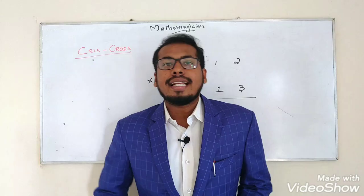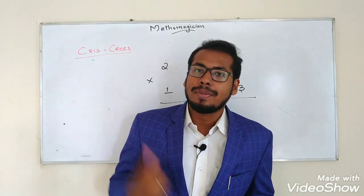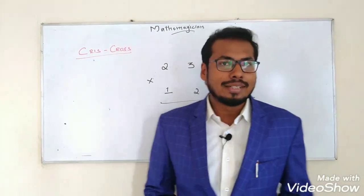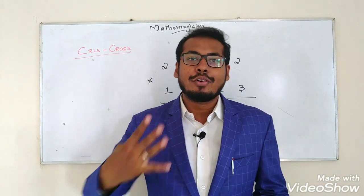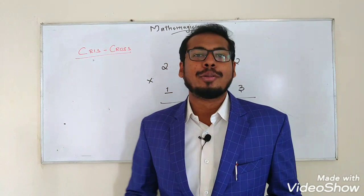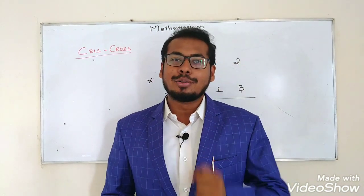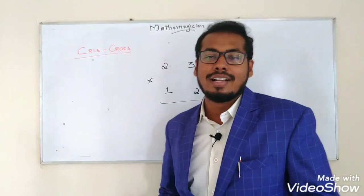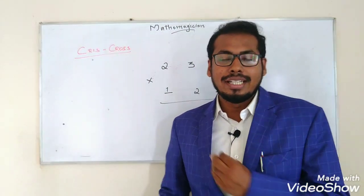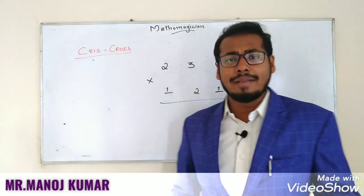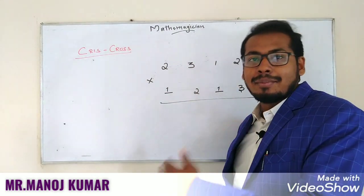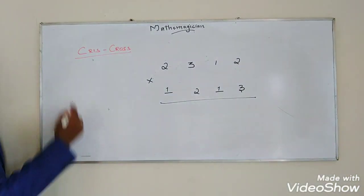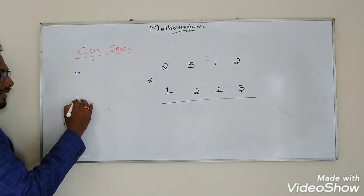Next we will go to the Criss Cross method. Using the Criss Cross method, we can multiply 2-digit by 2-digit numbers, 3-digit by 3-digit numbers, and 4-digit by 4-digit numbers. We will go through these easily step by step, starting from 2-digit numbers.